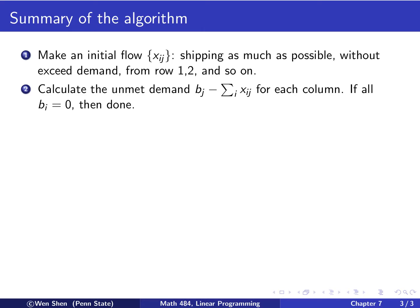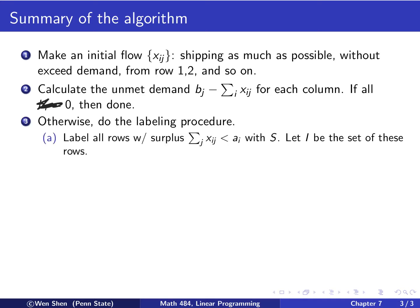So, once this flow is done, then I would calculate the unmet demand for each column by adding up all the x's in that column to see if it met the demand B. If it's zero, then you're done. And you have found a feasible flow. But you know that rarely happens.